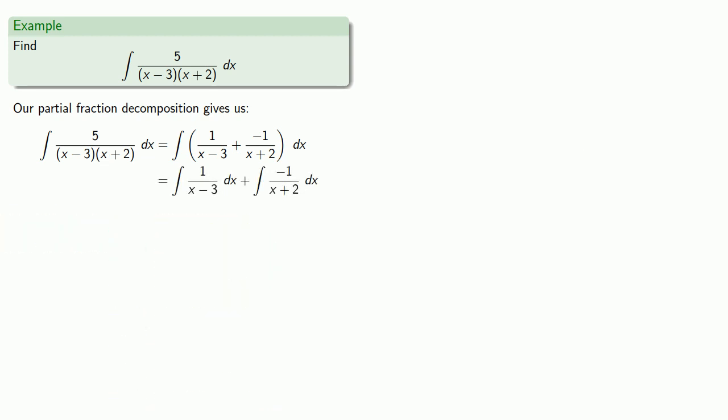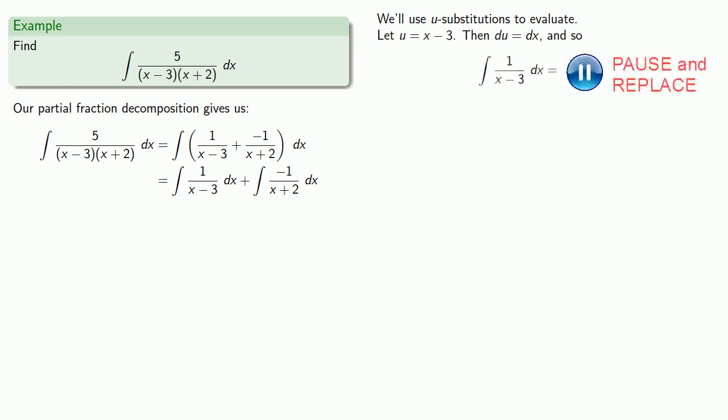So we'll use a u substitution. For the first integral we'll let u = x - 3 so du is dx. Making our substitutions. Integrating. And we'll put everything back where we found it. And to take into account the fact that you can't take the log of a negative number we'll throw the argument x - 3 into a set of absolute value bars.